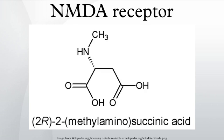The N-methyl-D-aspartate receptor, a glutamate receptor, is the predominant molecular device for controlling synaptic plasticity and memory function. The NMDA-R is a specific type of ionotropic glutamate receptor. NMDA is the name of a selective agonist that binds to NMDA receptors but not to other glutamate receptors. Activation of NMDA receptors results in the opening of an ion channel that is non-selective to cations, with an equilibrium potential near zero millivolts.